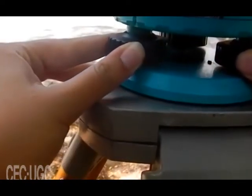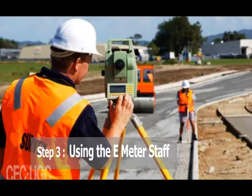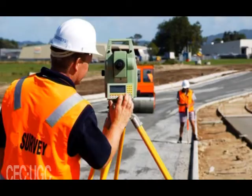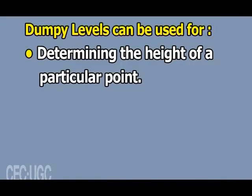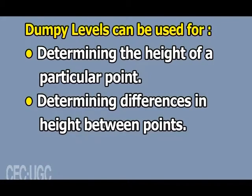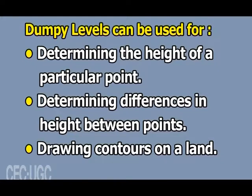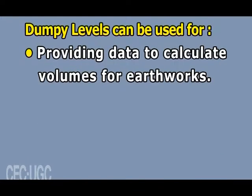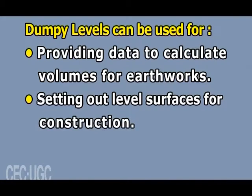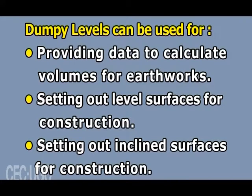Set the instrument on top of the tripod; at the center of the tripod is a large screw used to screw in the instrument. Adjust the screws at the bottom of the level until the bubble is at the center of the marker to ensure the instrument is leveled. Once the dumpy level is set, ask your assistant to stand a distance away while holding the E-meter staff. Dumpy levels can be used for determining height of a point, differences in height between points, drawing contours, providing data for earthwork volumes, and setting out level or inclined surfaces for construction.